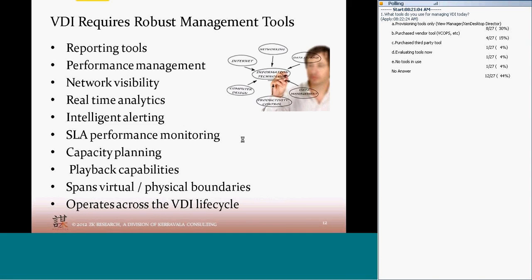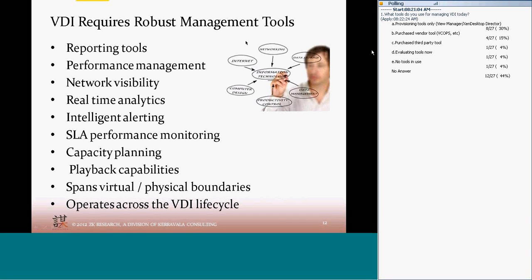VDI requires robust management tools — in fact, an entirely different approach to management. The resources today that drive VDI are very fluid, not static. You need to think about real-time reporting tools to understand what's happening now and how things are trending. If you can set a proper baseline, you can become much more predictive in your management. If you notice VDI performance going down every month, even before users call you, you can predict that problems will happen. Performance management tools are critical to understand what the user experience is like. Network visibility is a key — VDI is a network-centric compute model, so visibility of the network is a must to interpret how the user experiences applications.